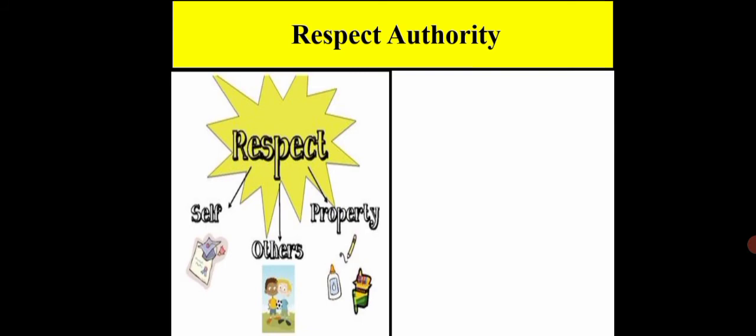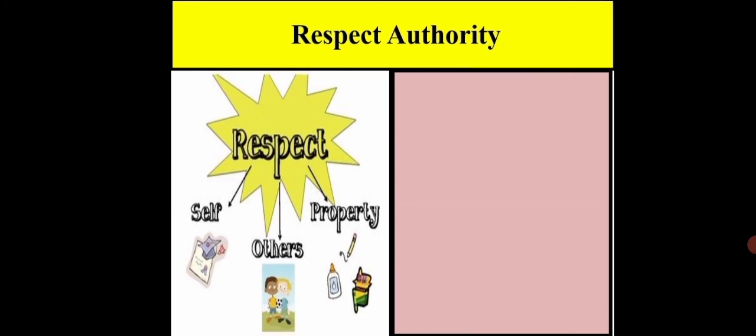We have to respect authority as well. When individuals respect the authority of social norms or the law, it assures collective security. When people break the law, they may harm or infringe on the rights of those around them. Individuals respect authority because they understand that doing so produces collective security. We have to respect ourselves, respect others, and respect property as well.